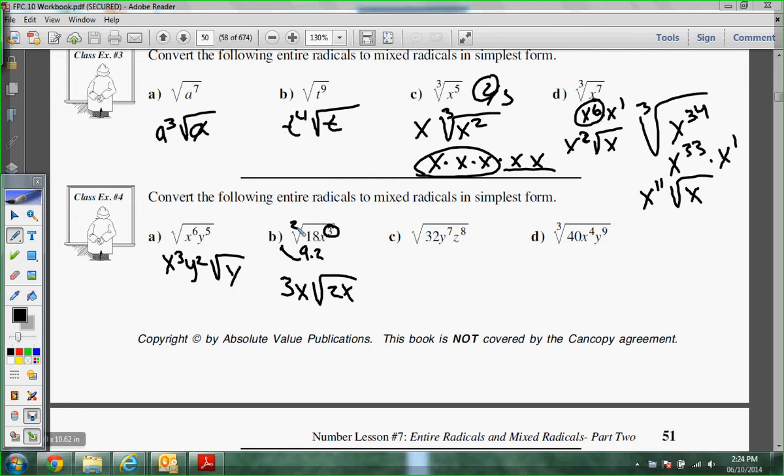32. Breezy, what's the 32 break down to? 16 times 2. What's the 16 come out as? 4. So I have a 4 out, and then I have a 2 in. Y⁷. Is that odd or even? Odd. So then what's coming out? Y³. And then what's left in? Y. And then Z⁸? Does it come out cleanly or is there one left over? Cleanly. Z⁴. That's Y³, Z⁴ there.